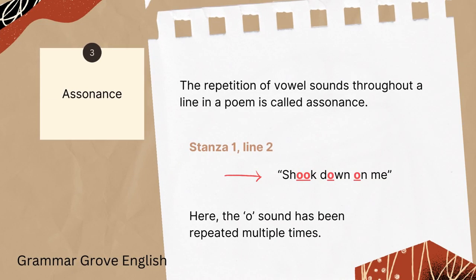Next we have assonance. Assonance is where we see vowel sounds repeated throughout a line. Whenever we see vowel sounds recurring throughout a line in a poem, that is an example of assonance. In stanza 1, line 2, we have 'shook down on me' — the O sound is very prominent: 'shook,' 'down,' 'on.' There is quite a bit of O sound present here, and this is a case of assonance.